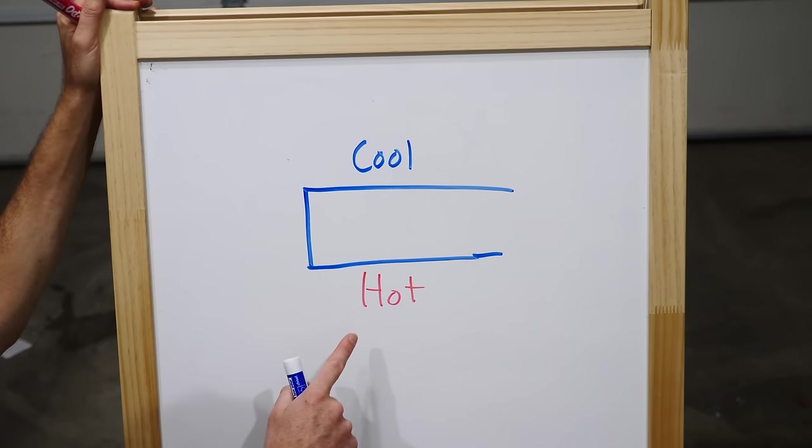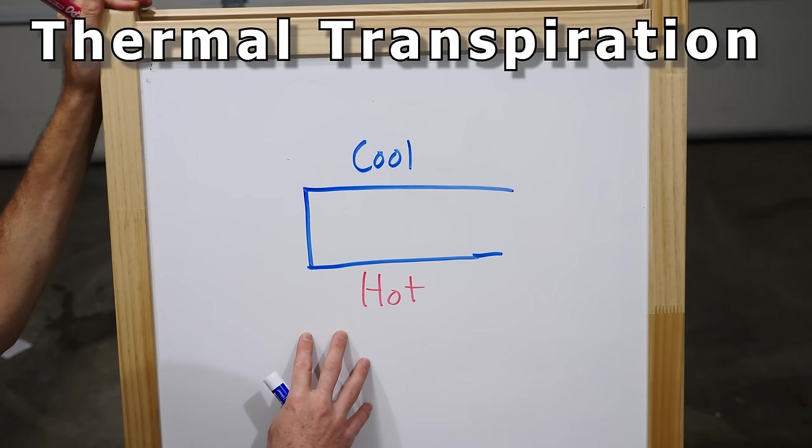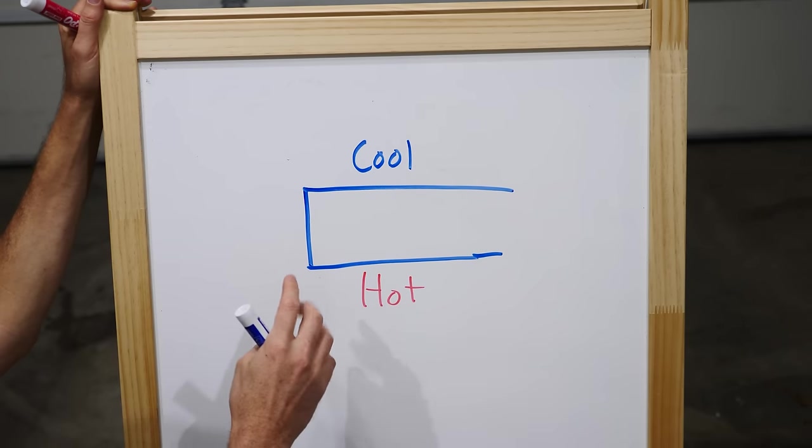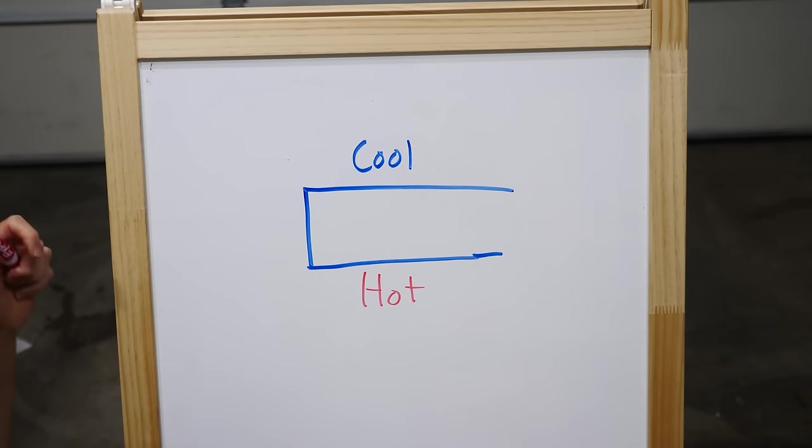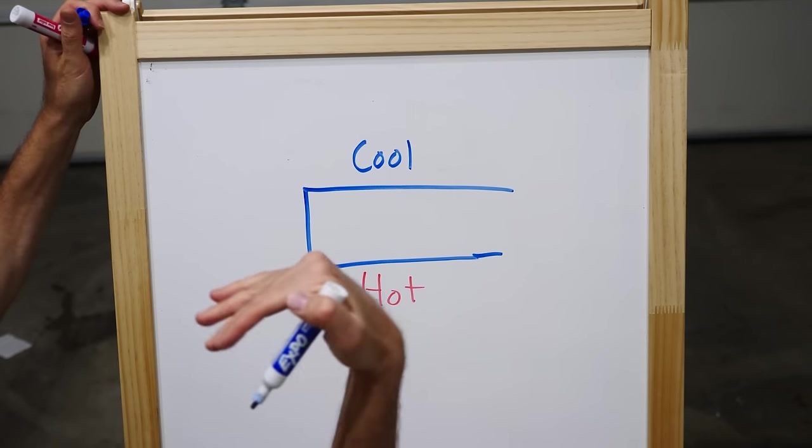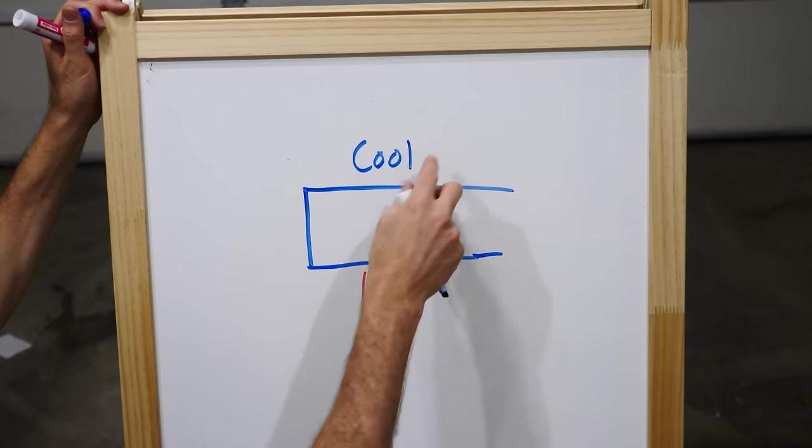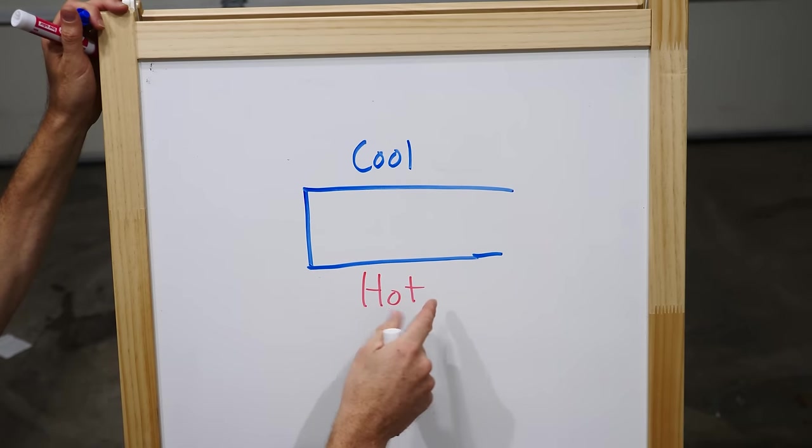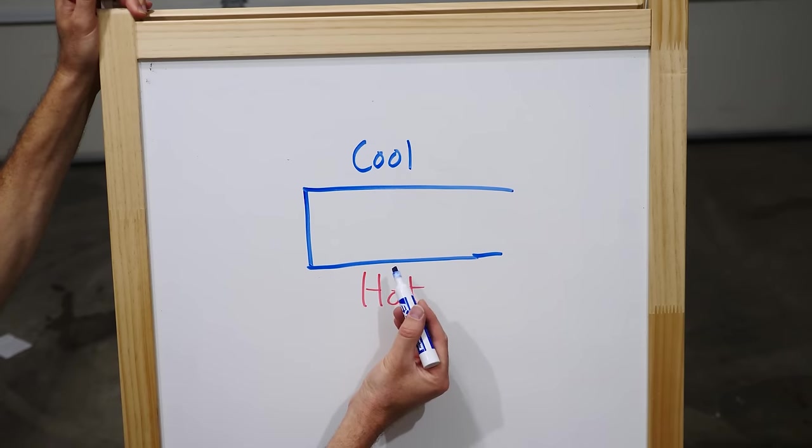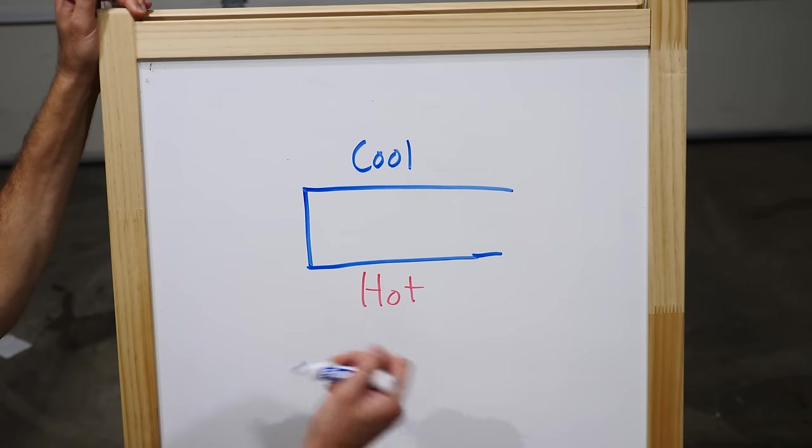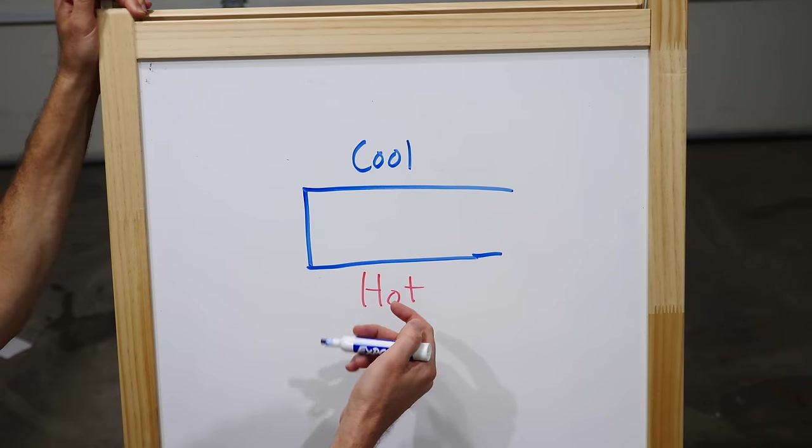So what is the real reason that a Crookes radiometer spins? The real reason is called thermal transpiration. And it's actually due to the forces on the edges of the vanes and not the main flat surface of the vane itself. So let's say we're looking at a cross section of the vane and this is the cool side and this is the hot side. So this is the black side and this is the white side.